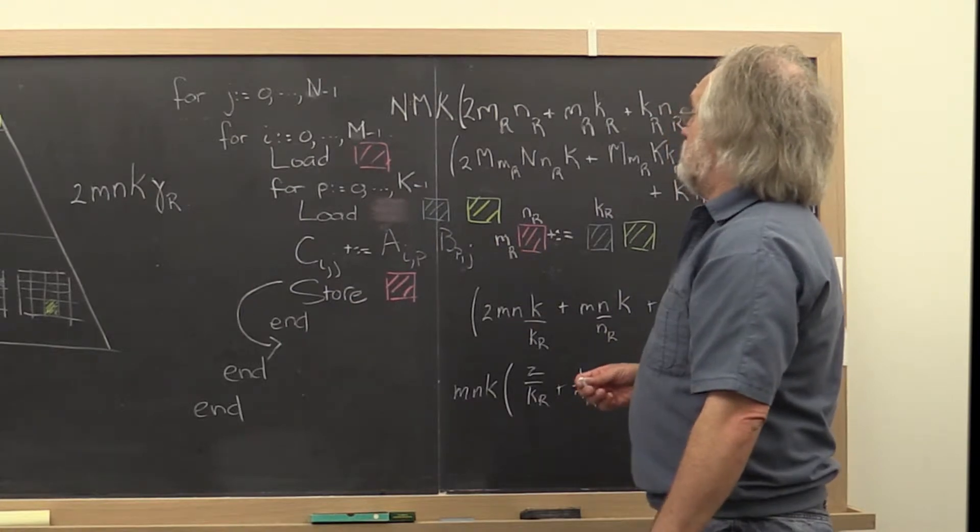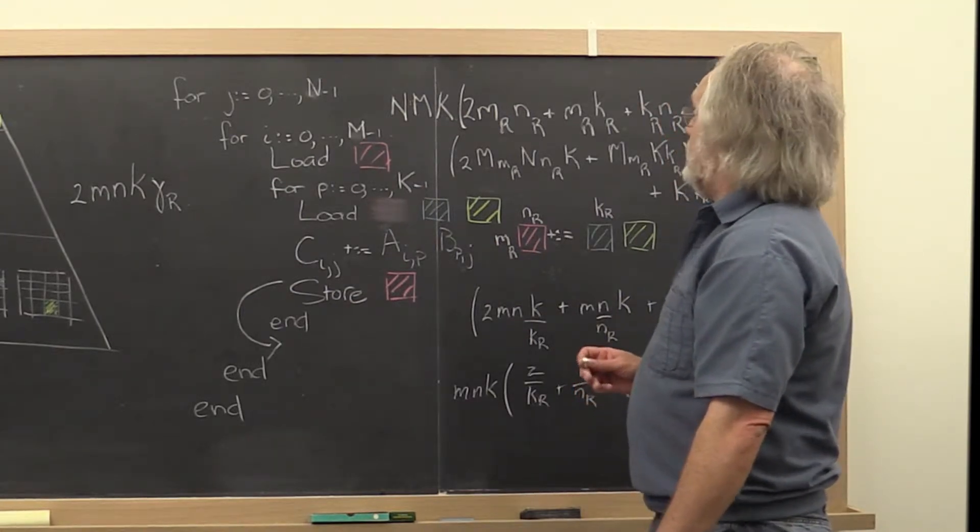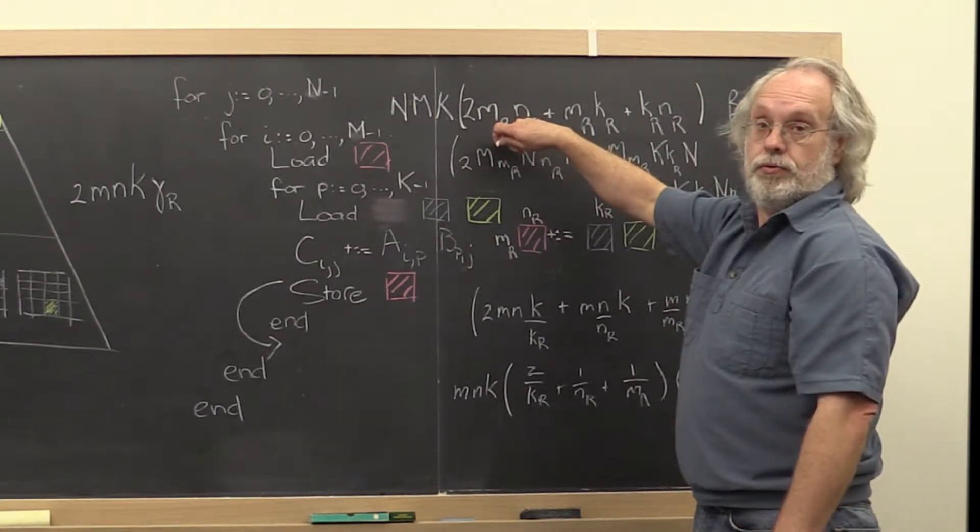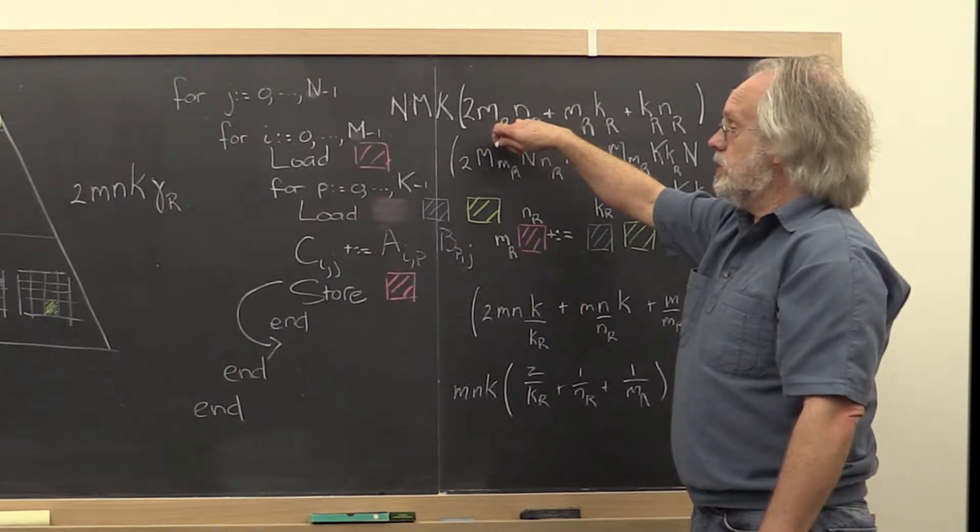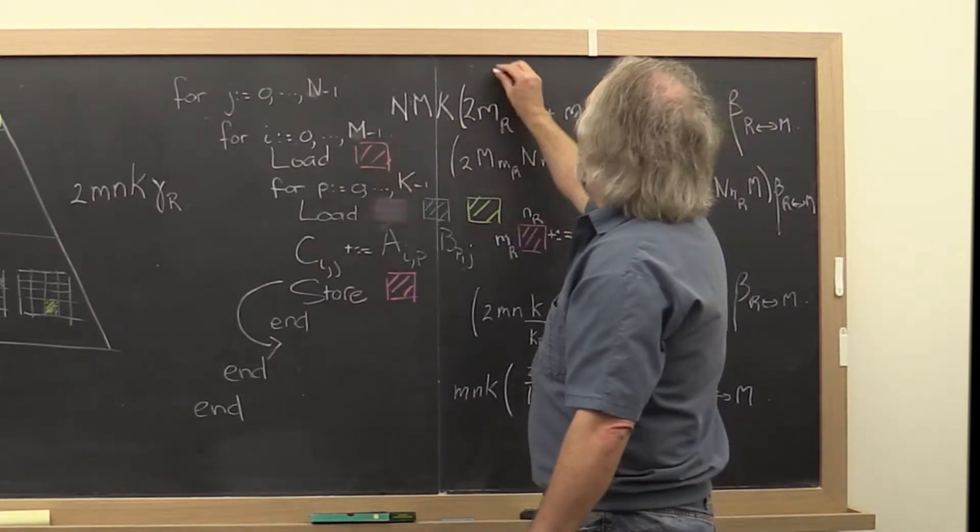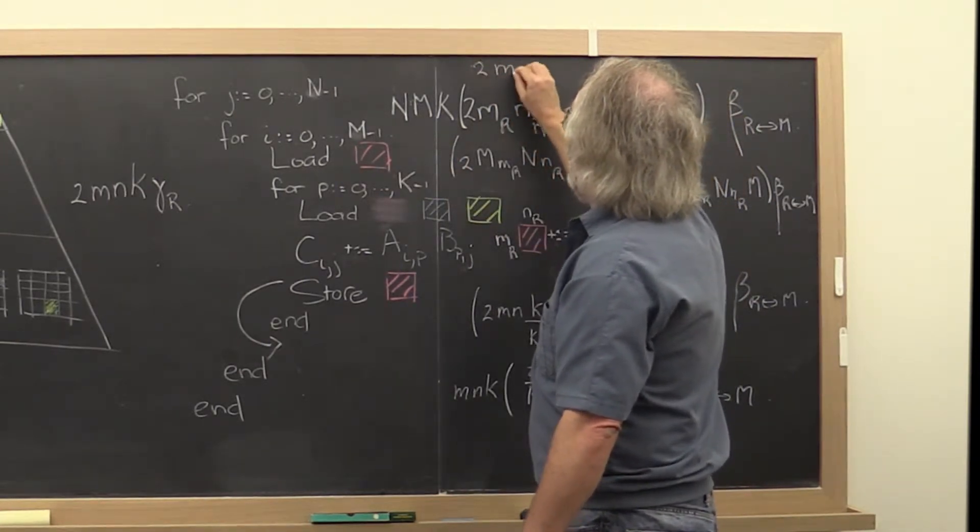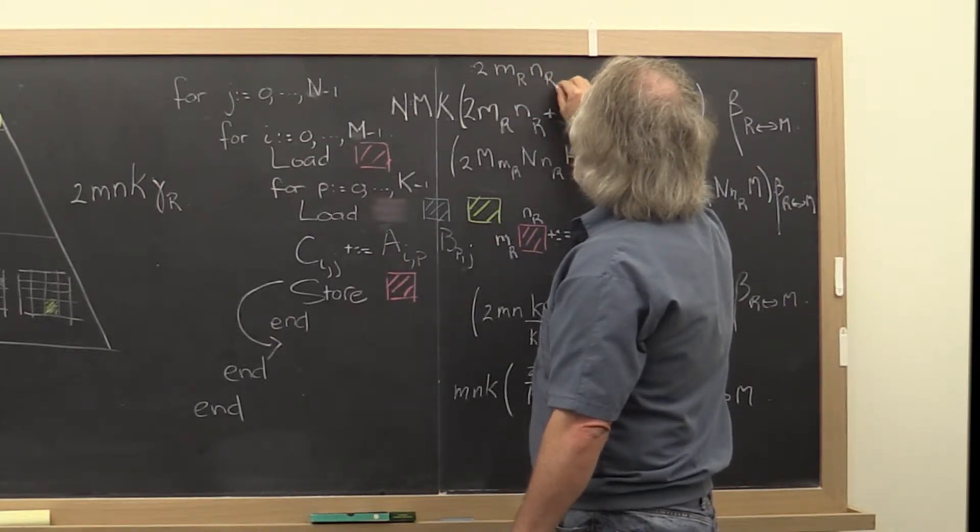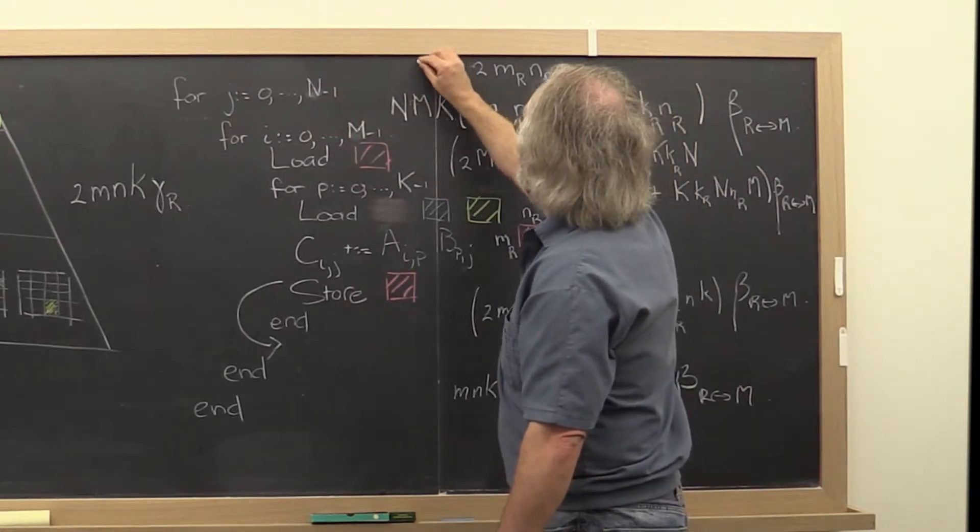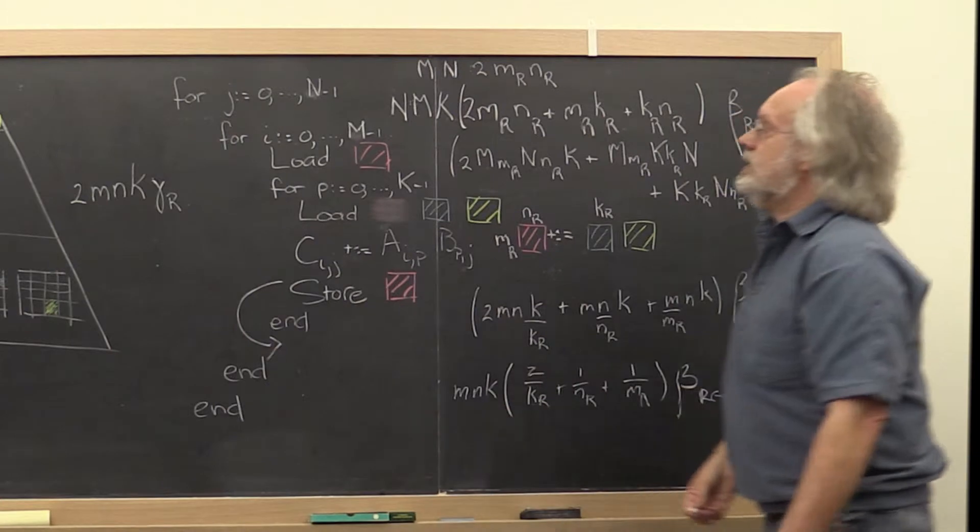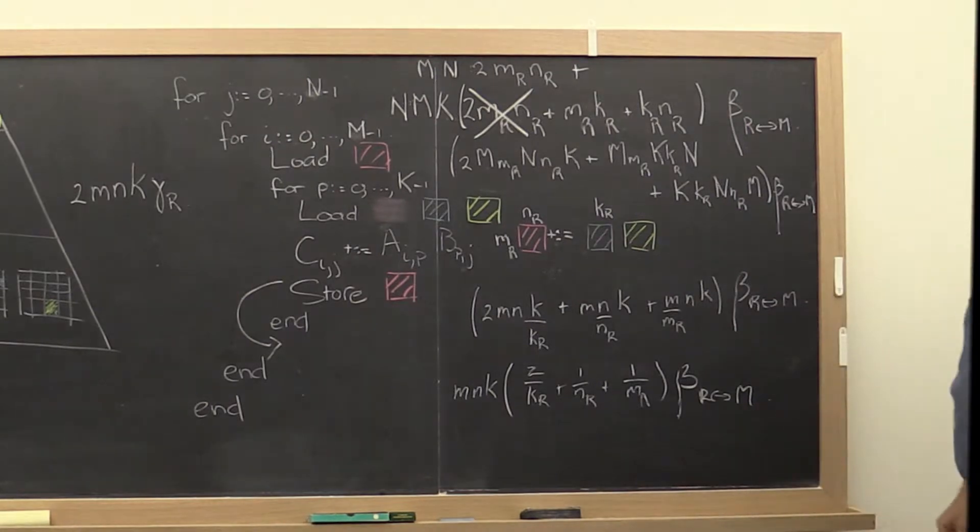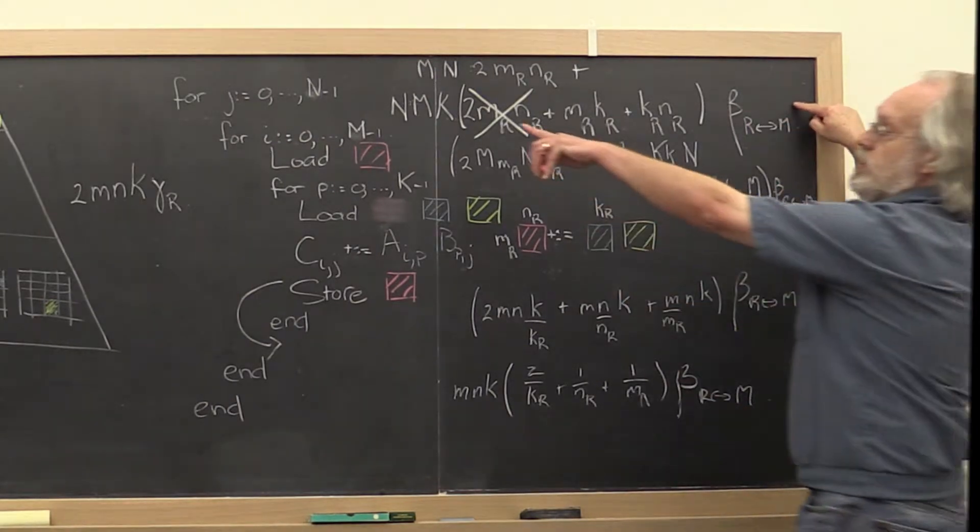Now what does that mean? What that means is that we're not doing this loading and storing every time through. So the loading of the submatrix of C is a one-time two, well loading and storing is two times m times r which is being done m times n times. And then this whole term disappears from this right here.